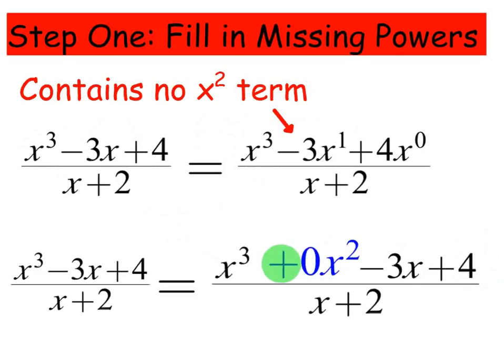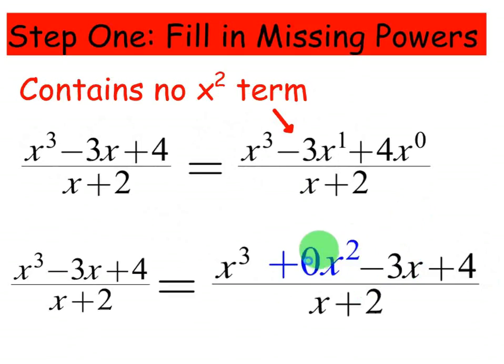Another example would be if the x term was missing, you would put 0x. You just put the term there with a zero next to it, because zero times anything is zero — it doesn't really change the value of the expression.